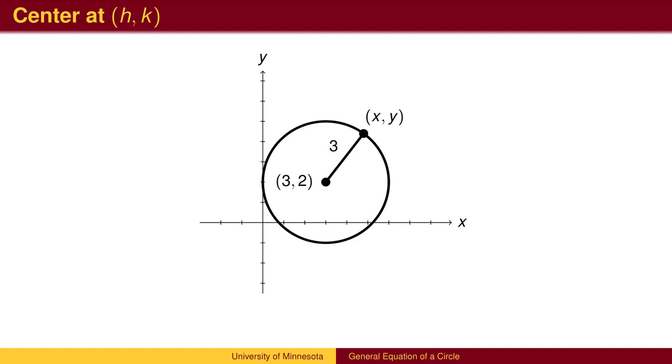What happens if we move the center of the circle away from the origin? In this example, the radius is the distance from the center, (3, 2), to an arbitrary point, (x, y).